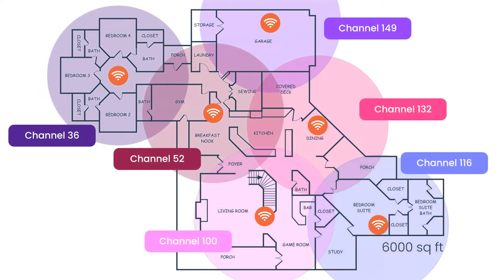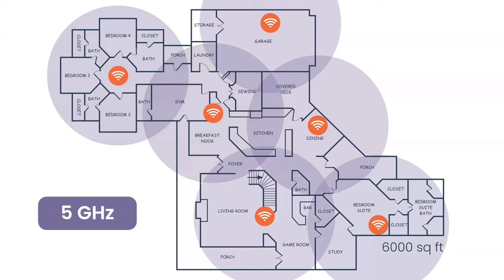There are six 80MHz-wide channels available in 5GHz, which means in this six-AP scenario all six access points can be on different channels. Even though they're in the same installation, none will directly interfere with each other — no co-channel contention within your own project. You can create a channel plan well before the installation even begins.